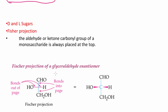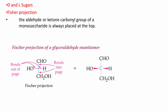Let's take a look at D and L sugars. The aldehyde or ketone carbonyl group of a monosaccharide is always placed on the top when drawing Fischer projections. Here's glyceraldehyde — one chiral carbon. To draw the Fischer projection, we have the chiral carbon with horizontal and vertical lines. The horizontal bonds are coming out of the page, and the vertical bonds are going into the page.